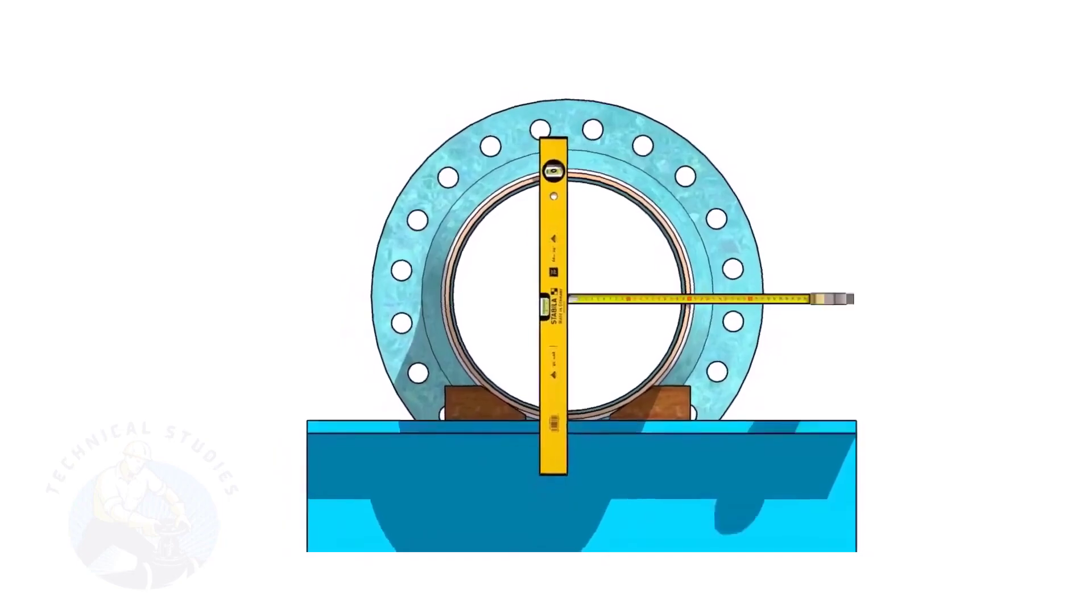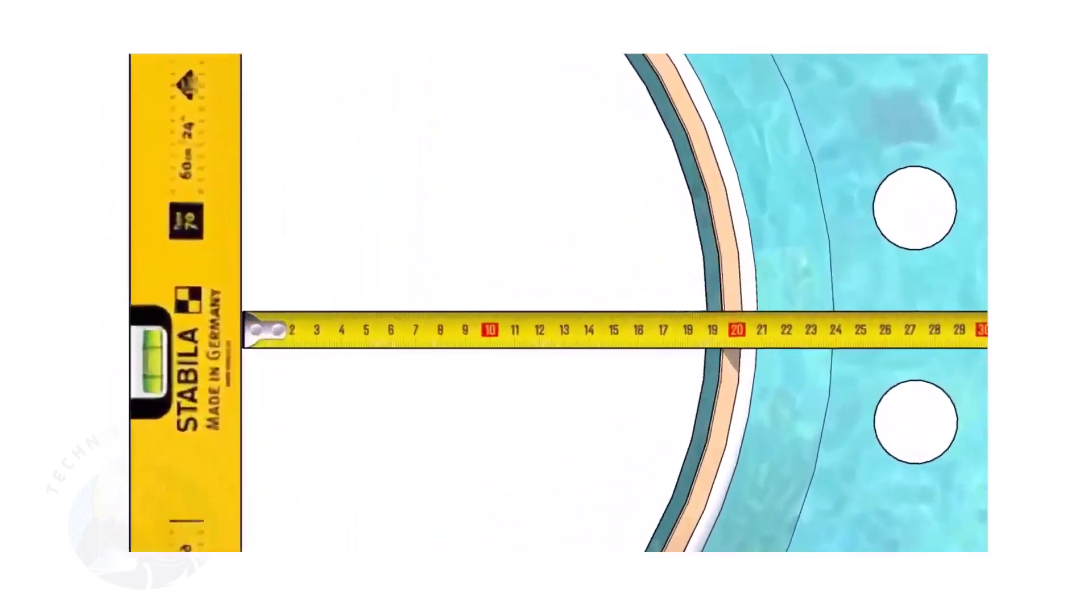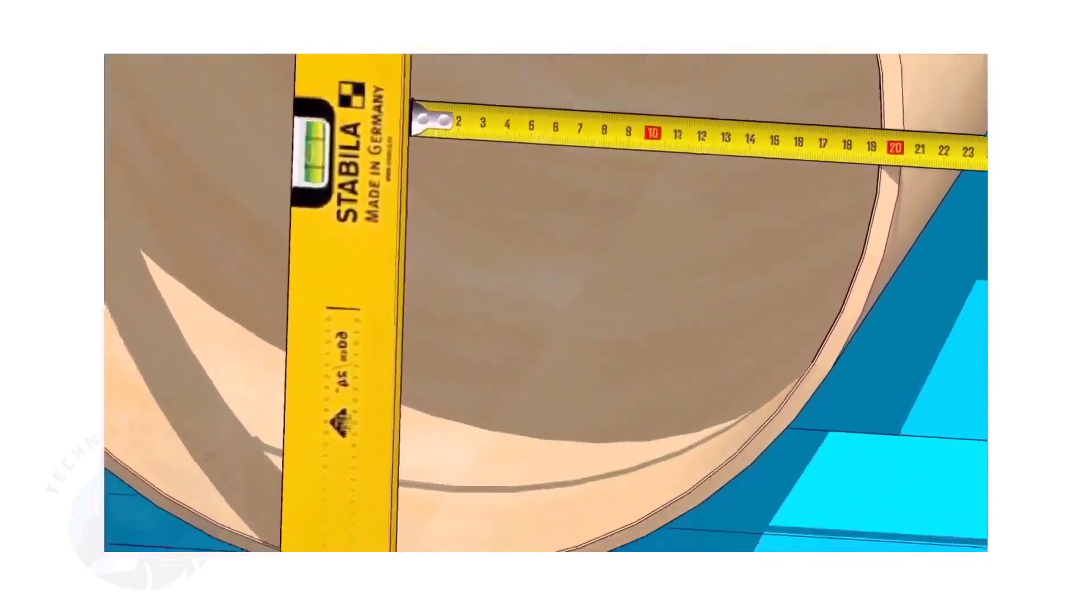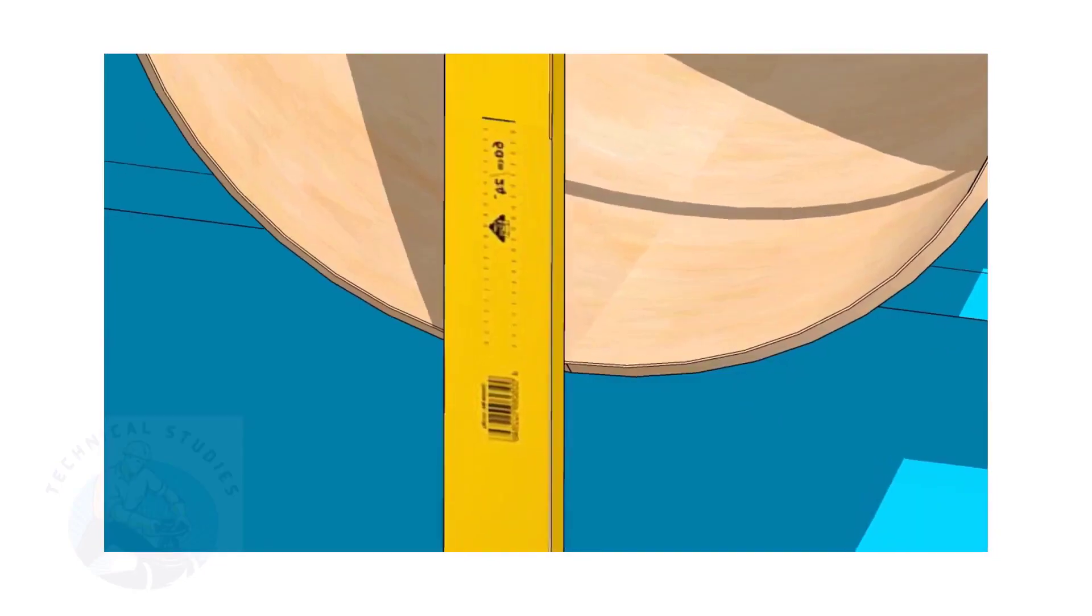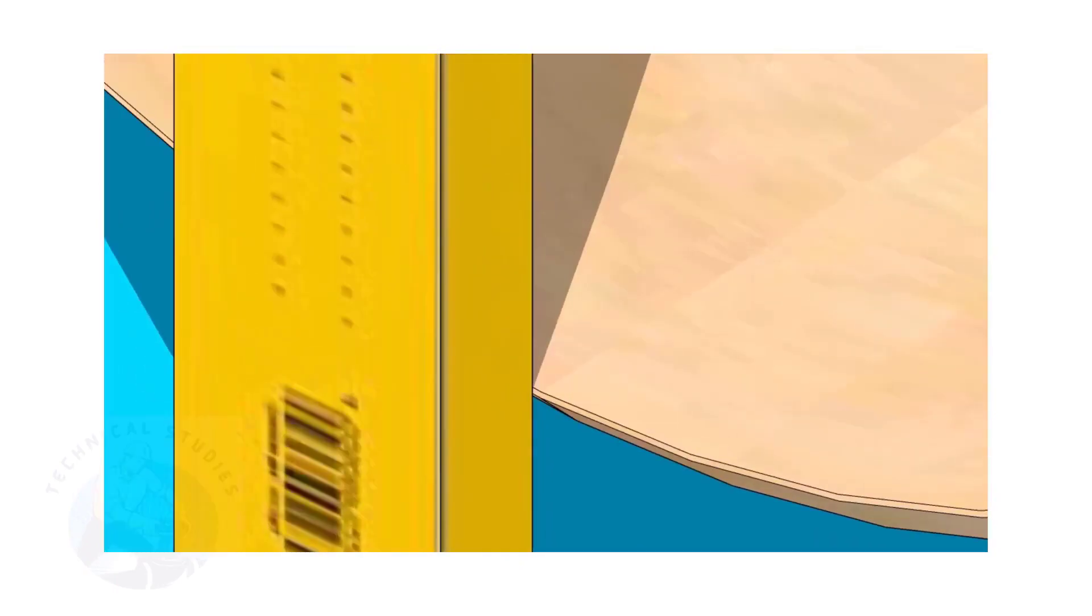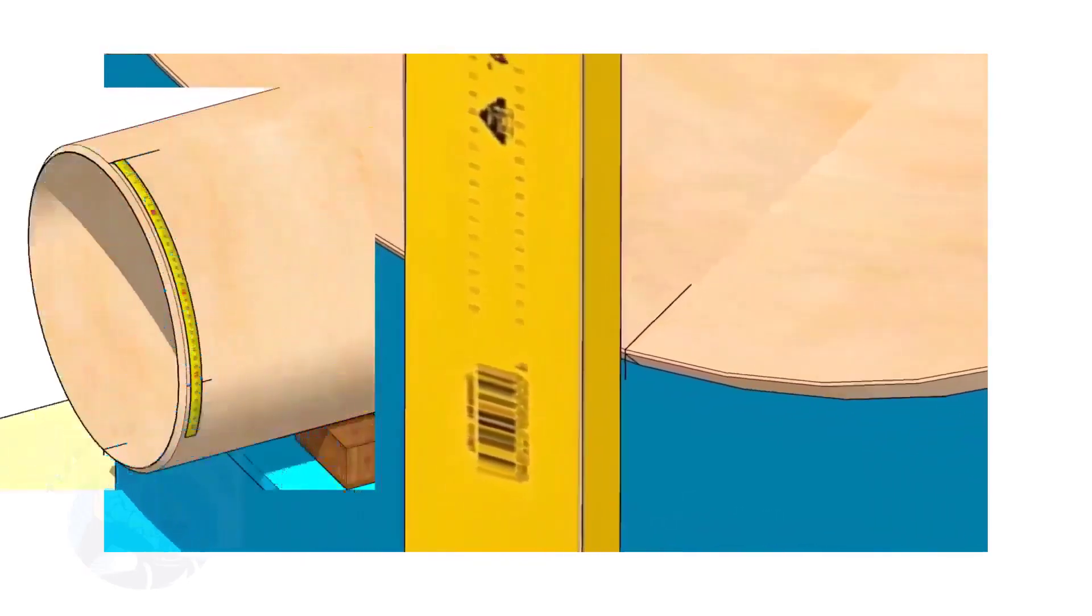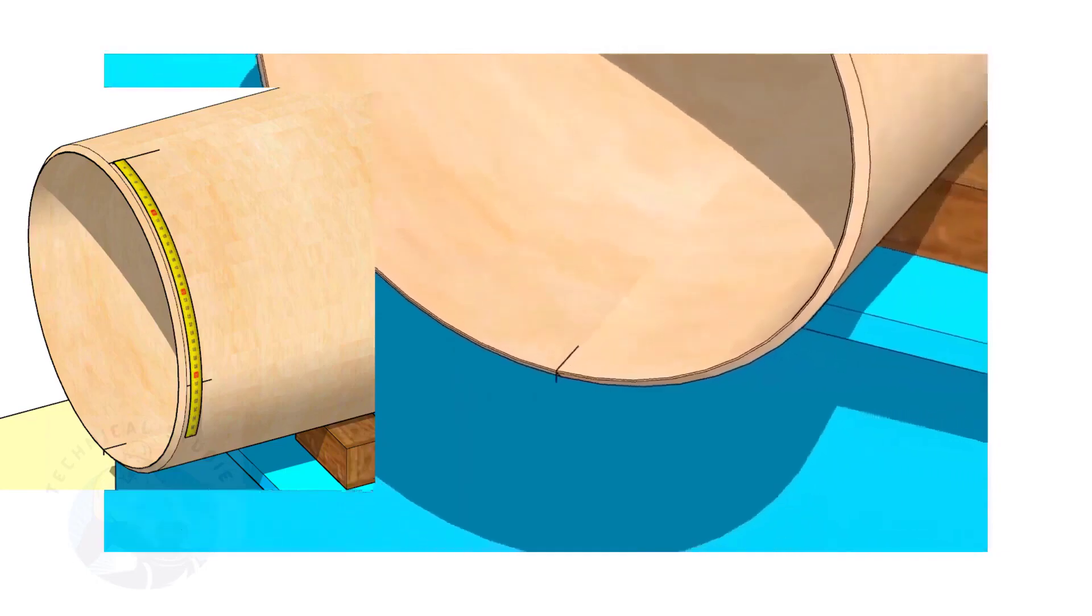Hold the spirit level vertically and transfer the top center mark to the bottom side, as shown. Mark the quarter circumference on both sides of the pipe.